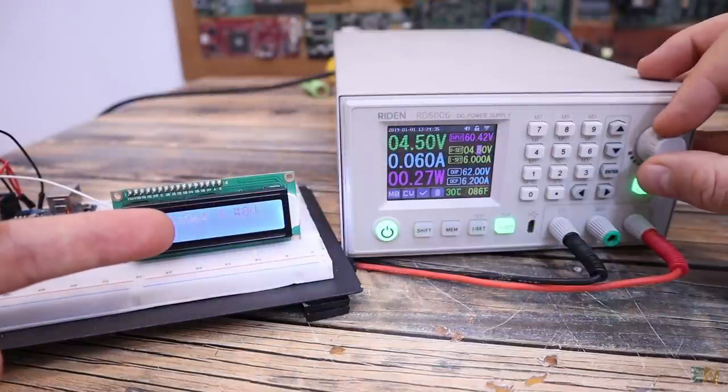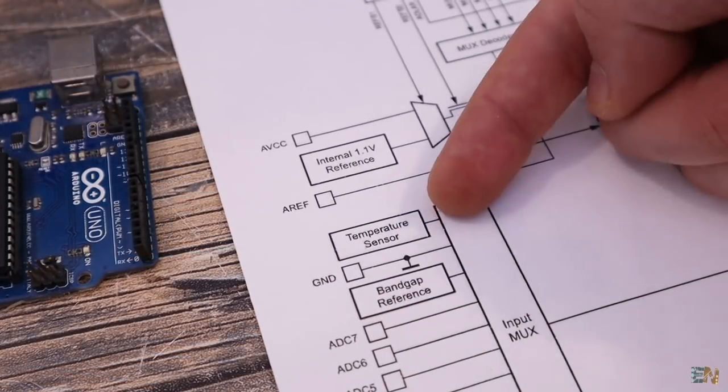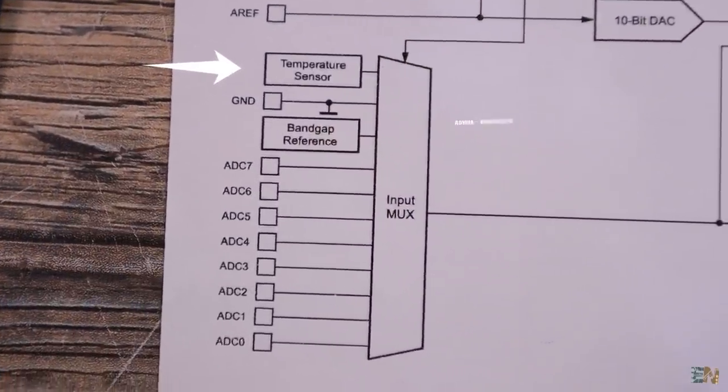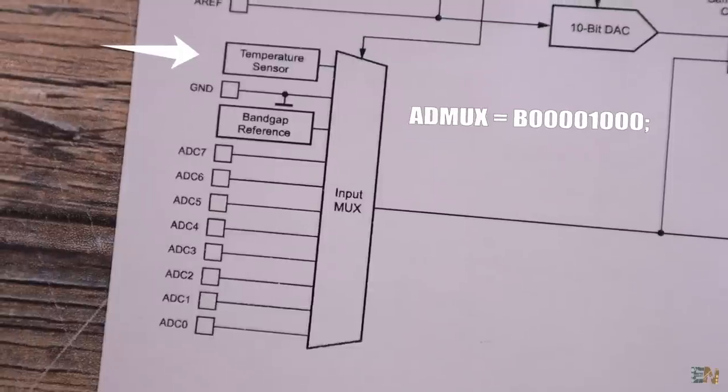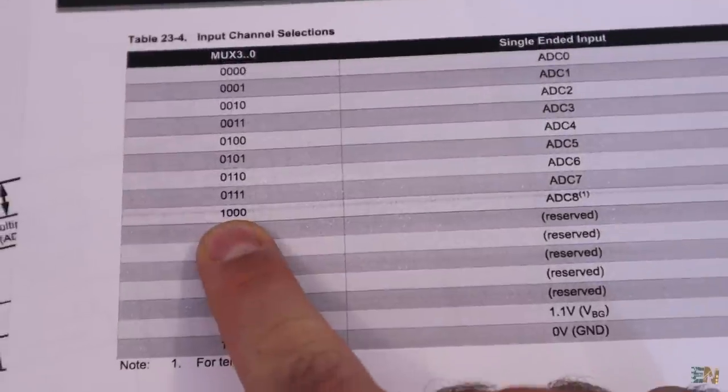But now remember that I've told you that the Arduino has an internal temperature sensor. If we take a look at the ADC blocks, that sensor is connected at the input 11. So if we set the ADMAX to have the max bits to 1000, then the sensor is connected to the ADC conversion block.